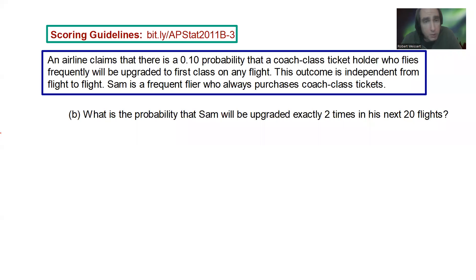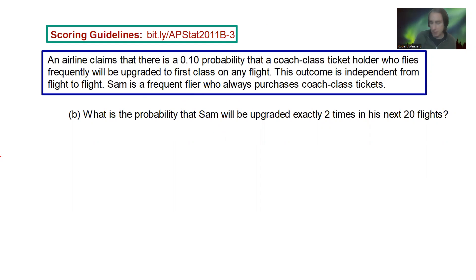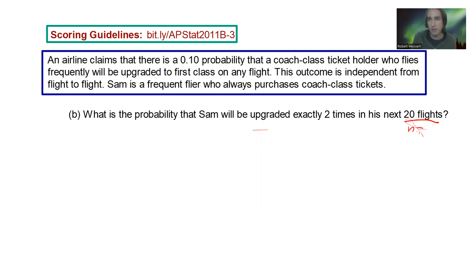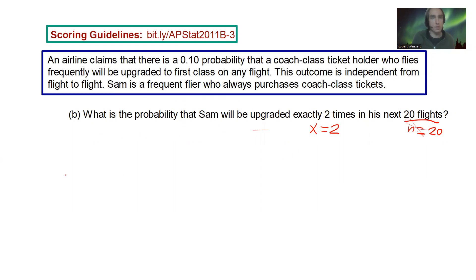Part B: what's the probability that Sam will be upgraded exactly two times in his next 20 flights? Exactly two times. So we're looking for a binomial distribution. We have an N value that's set and exactly equal to 20, and we want to know exactly two times — not less than, not above, not less than or equal to, not greater than or equal to — exactly two times.